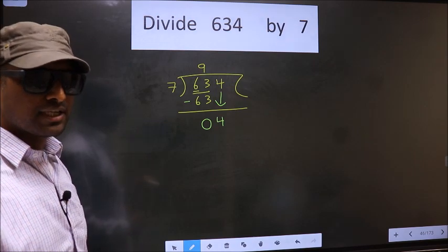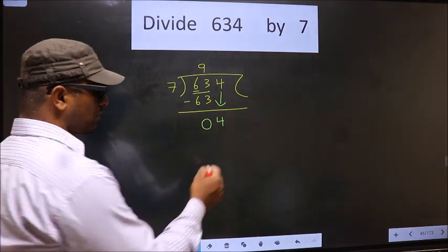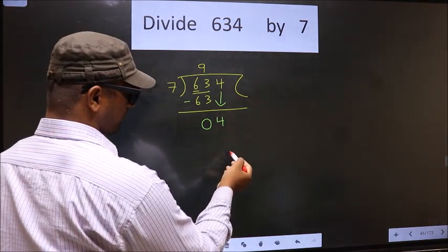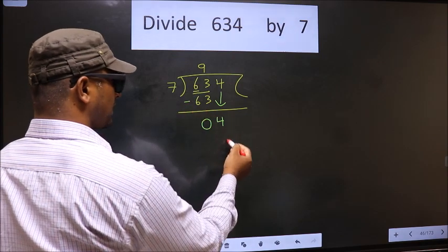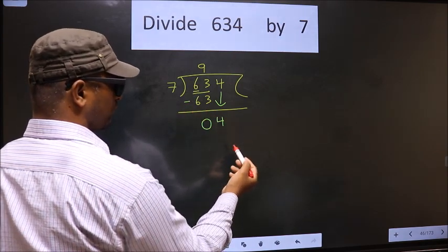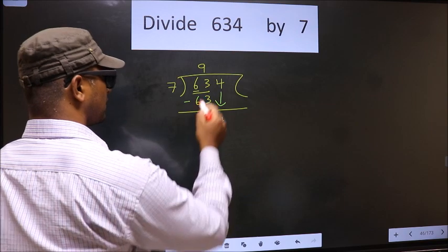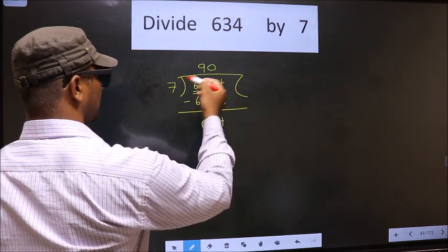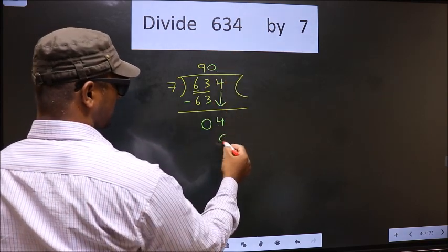Instead, what you should think of is, what number should we write here? If we write 7 here, that is larger than 4. So what we do is, we take 0 here. So 7 into 0, 0.